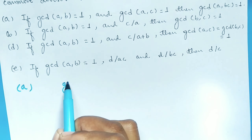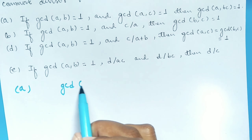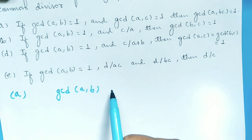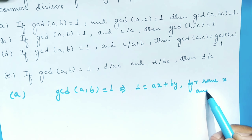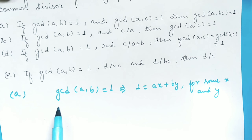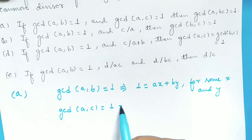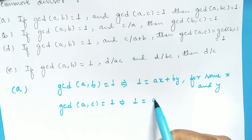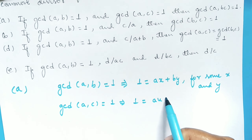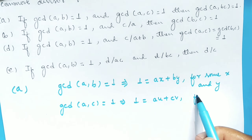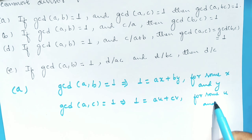It's given that GCD of A and B is 1. So it implies that I can write 1 as a linear combination of A and B: AX plus BY, for some X and Y. Also, it's given that GCD of A and C is 1. Again, 1 is a linear combination of A and C: AU plus CV, for some U and V.